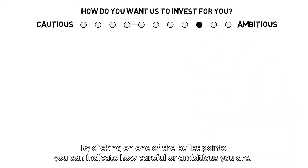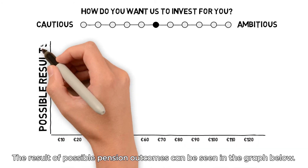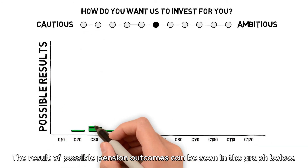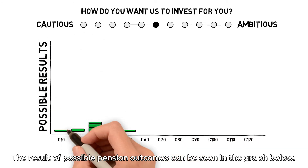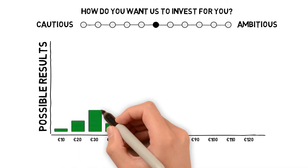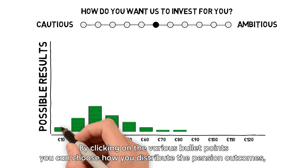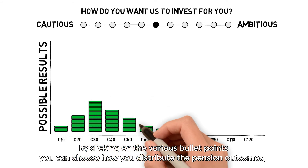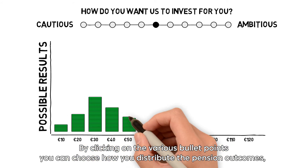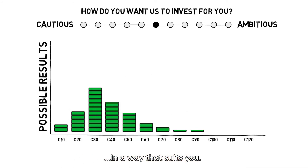By clicking on one of the bullet points, you can indicate how careful or ambitious you are. The result of possible pension outcomes can be seen in the graph below. By clicking on the various bullet points, you can choose how you distribute the pension outcomes in a way that suits you.